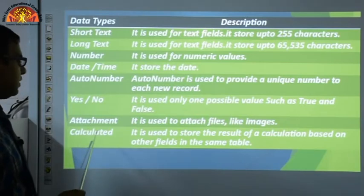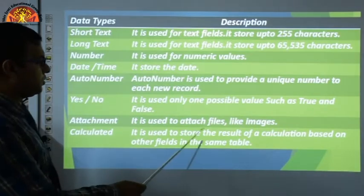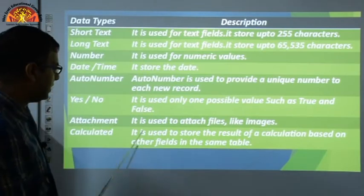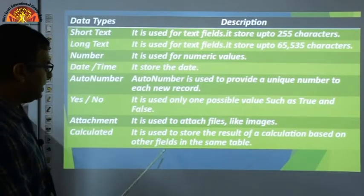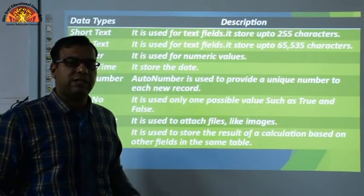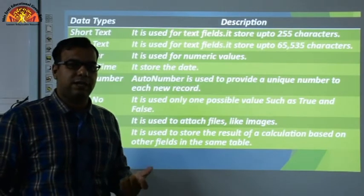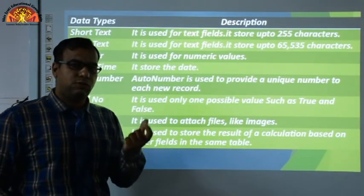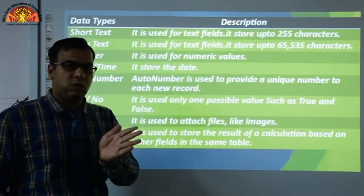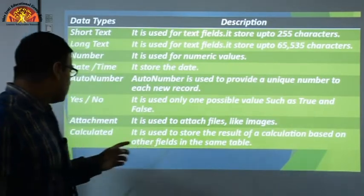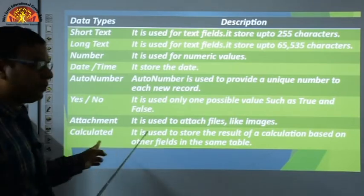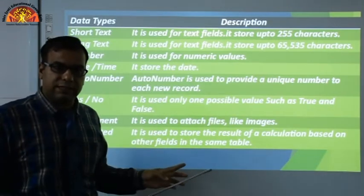Next is Calculated. It is used to store the result of a calculation based on other fields in the same table. If you perform any calculation and want to store the result in a new column, you would set that column's data type to Calculated.